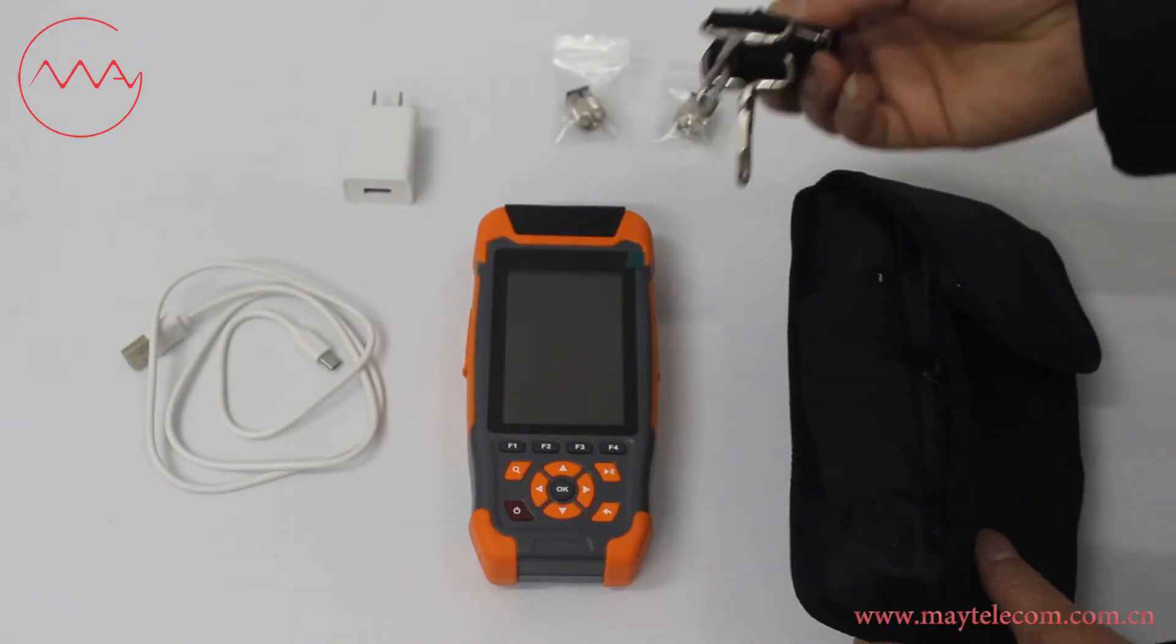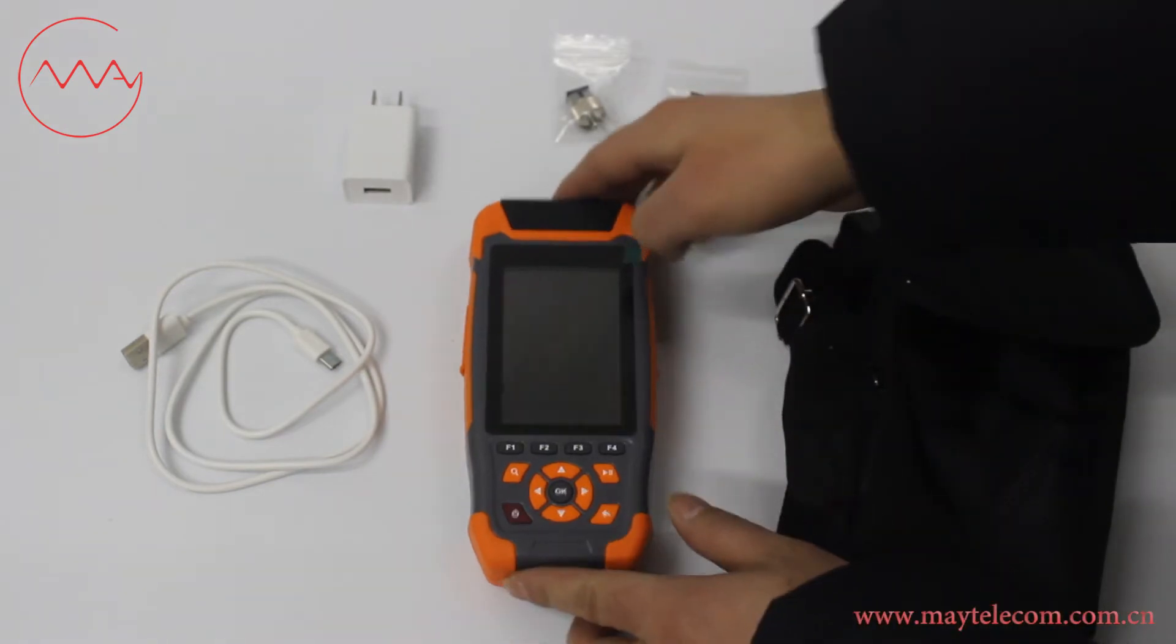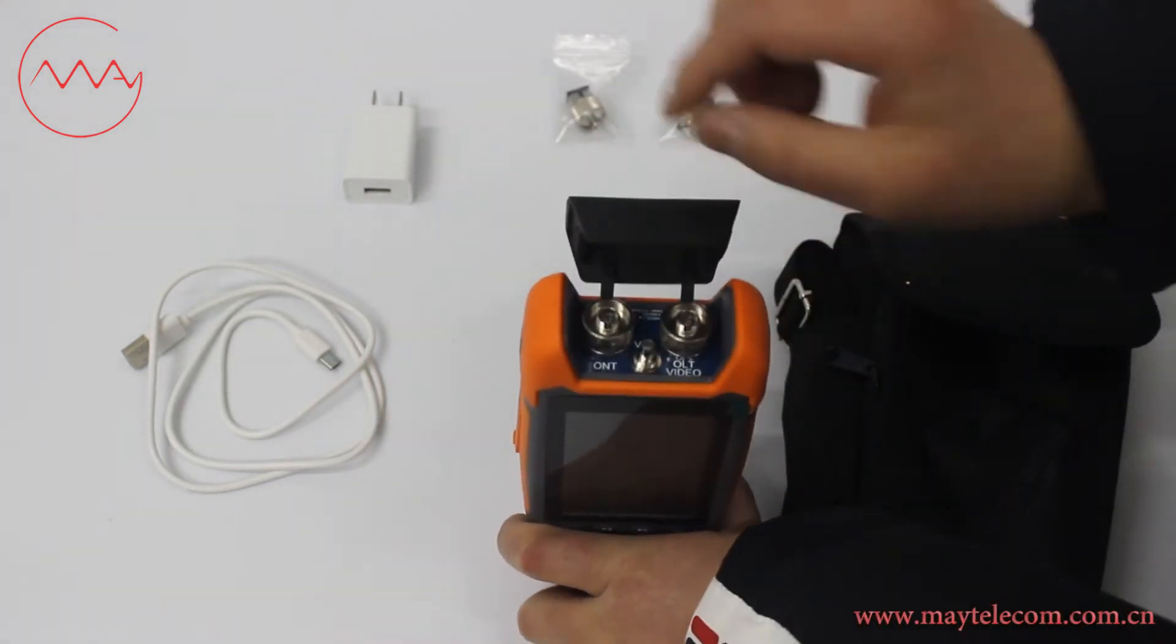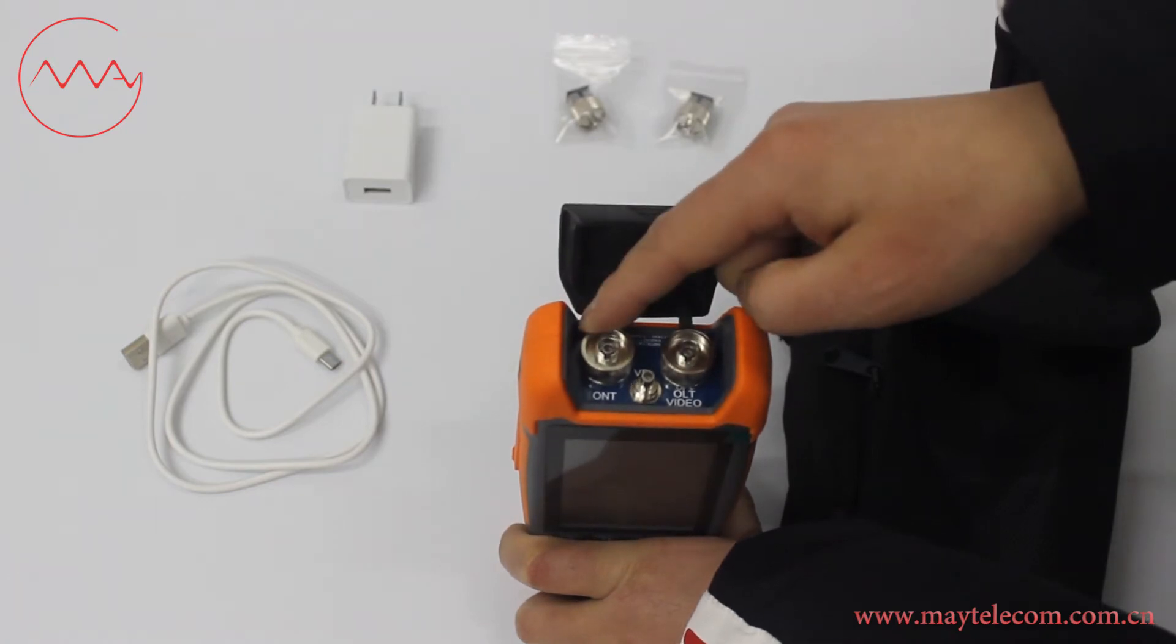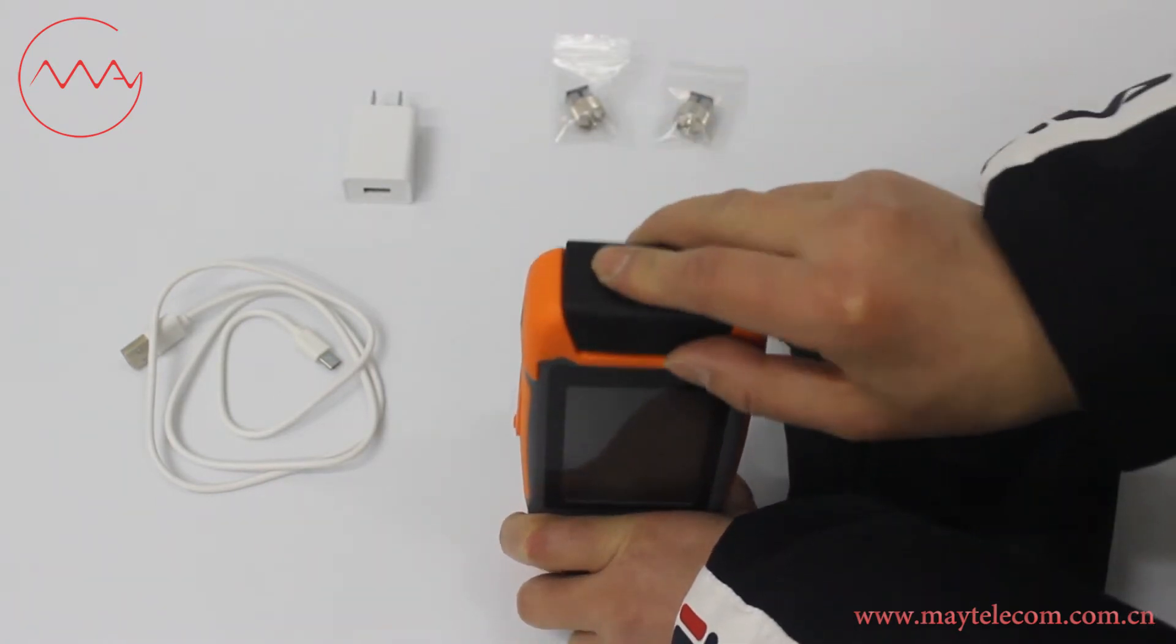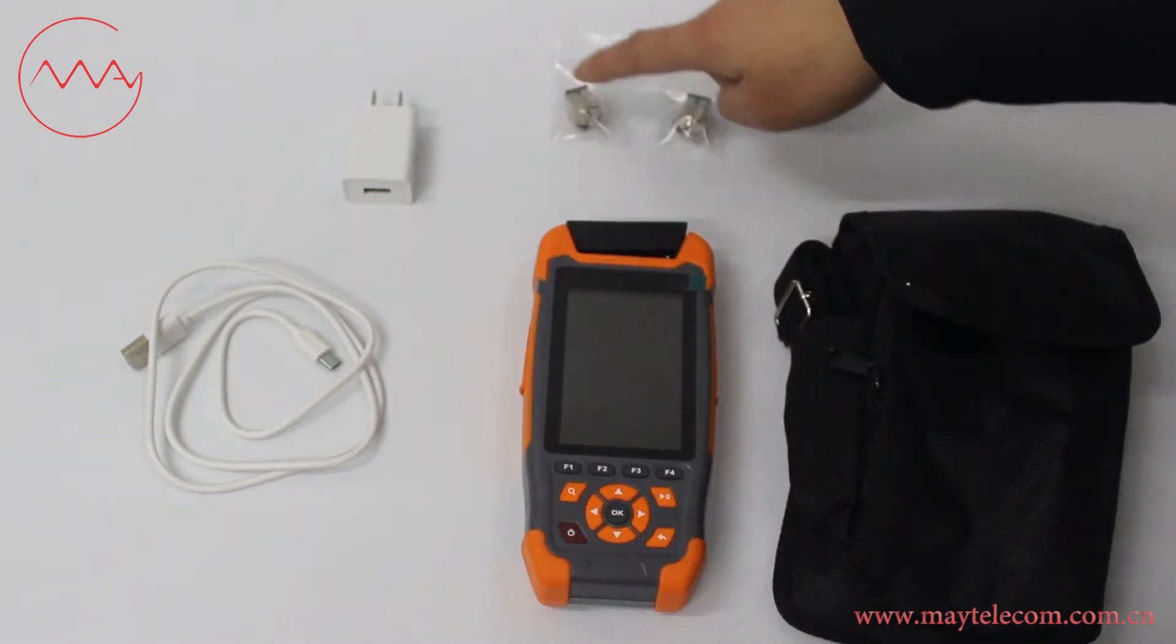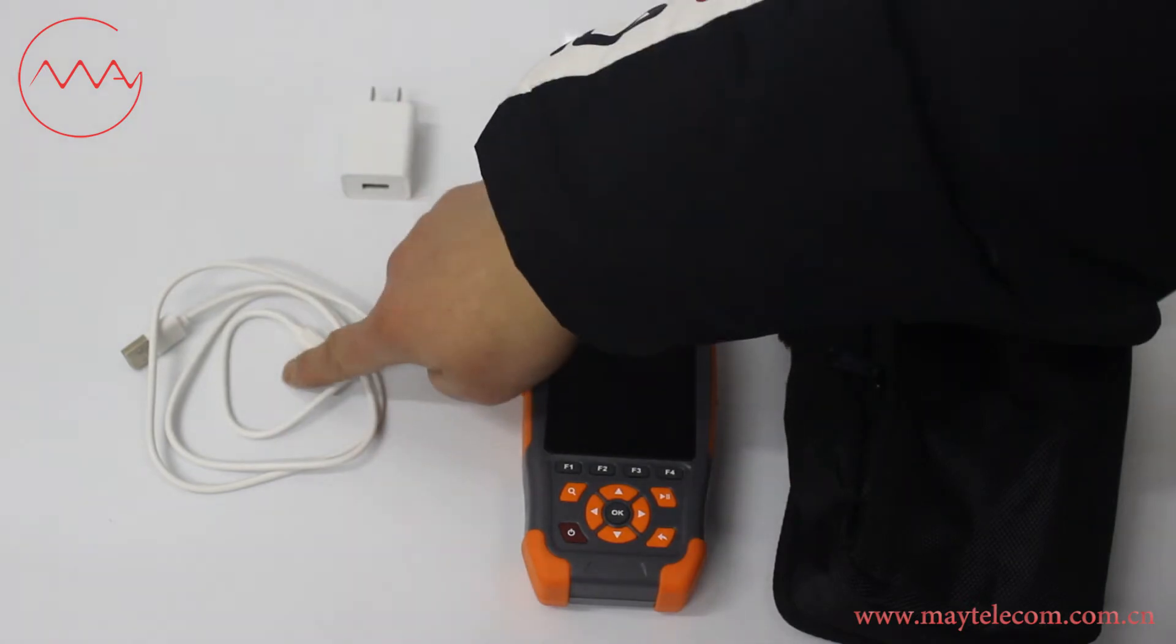The device comes with a shoulder strap bag, pump power meter, OELT and ONT ports with two pieces of SC adapters each, power adapter, and USB cable.